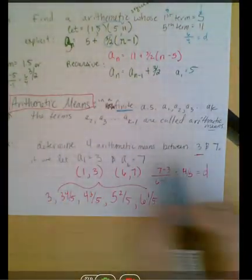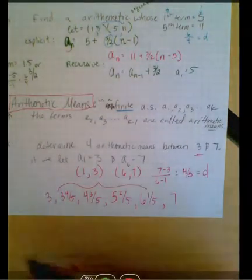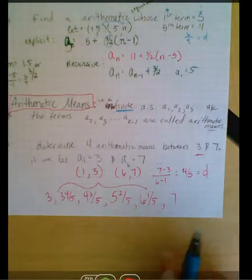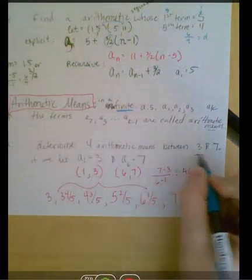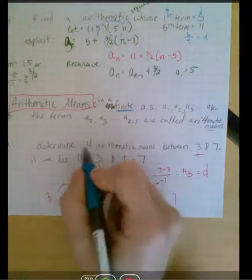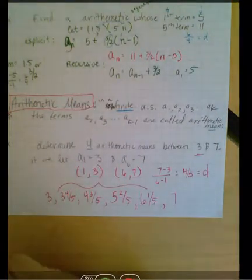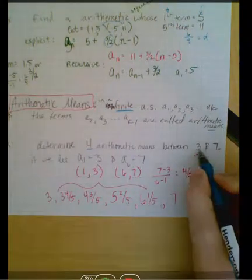So let's say I'm given two terms, the first term and the last term, and it says to determine the four arithmetic means between 3 and 7. Well, if four are the number of means between them, then this is the first,